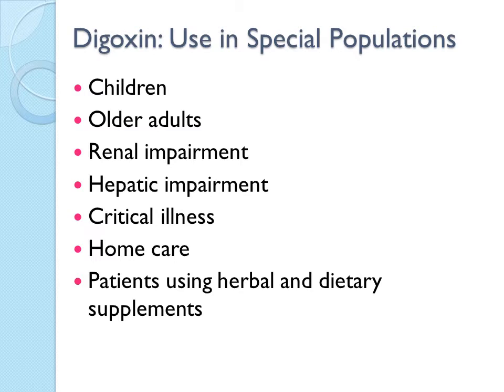Digoxin must be used cautiously in patients with diminished renal function, as renal impairment delays the drug's excretion, and both loading and maintenance doses should be reduced. Digoxin toxicity develops more often and lasts longer in patients with renal impairment, who must be monitored for adverse effects and have serum digoxin levels checked more frequently. In contrast, hepatic impairment has little effect on digoxin clearance, and dosage adjustments are not required for patients with hepatic impairment.